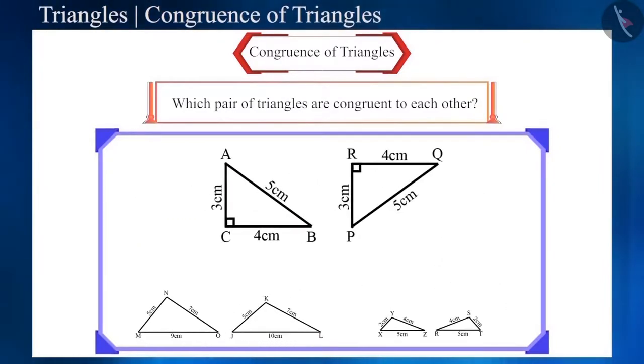If you notice the first pair, the sides of the triangle are 3, 4, and 5 cm. The only difference is that the second triangle is rotated. If the corresponding sides of the triangle are equal, then the triangles will be congruent.